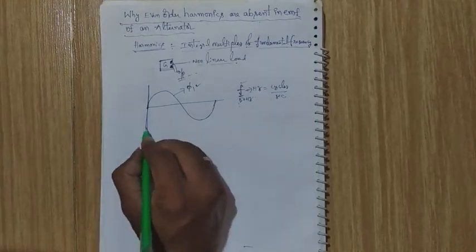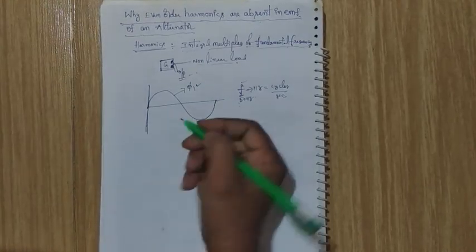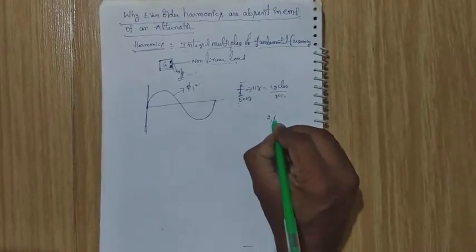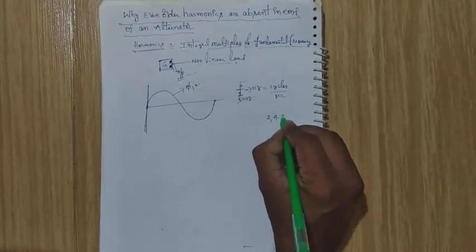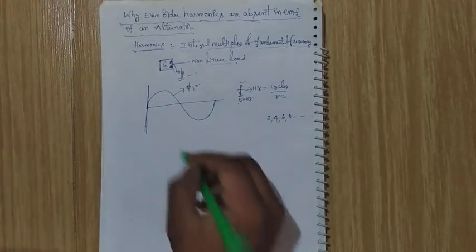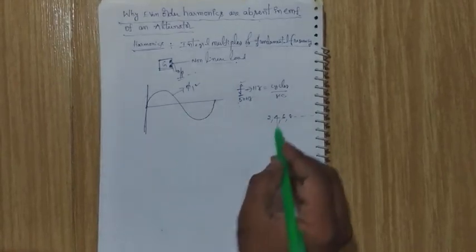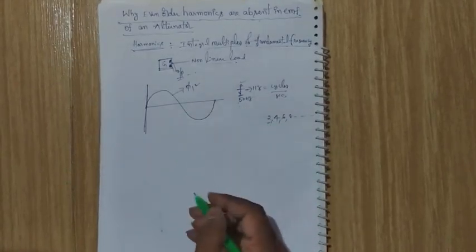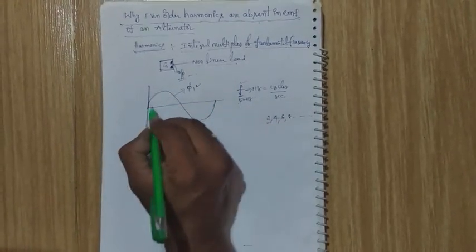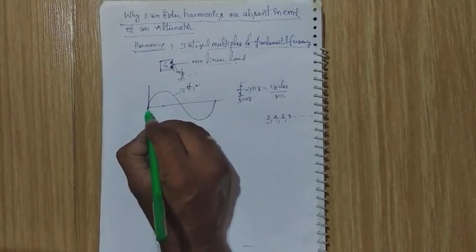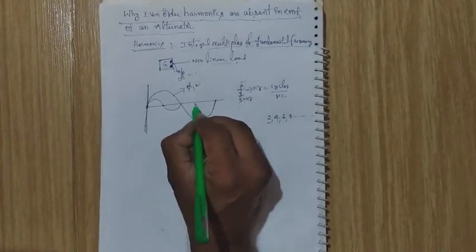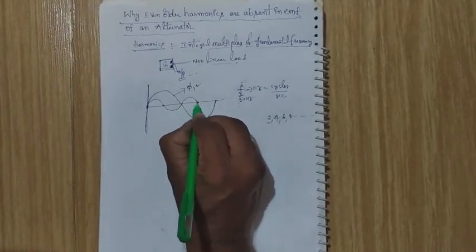I will consider the second harmonic, because even-order harmonics means second harmonic, fourth harmonic, sixth harmonic, eighth harmonic, and so on. In this lecture I consider second harmonic EMF. Second harmonic EMF means that instead of one complete cycle, two complete cycles appear in the output of the generator.